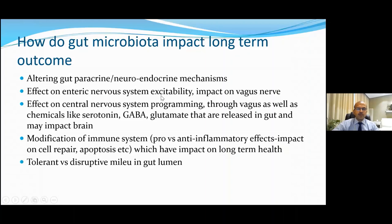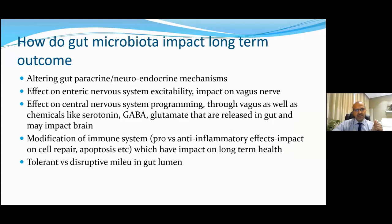It's important to think about how gut microbiota impacts our long-term outcomes — particularly relevant when discussing cesarean delivery and how the gut microbiota formed after cesarean delivery may impact long-term health. There is an alteration of gut paracrine and neuroendocrine mechanisms. When we talk of neuroendocrine mechanisms, we mean stress hormones, the pituitary effect on ACTH, and the cortisol feedback mechanism. High stress hormones affect long-term health. The short-chain fatty acids also provide paracrine feedback.